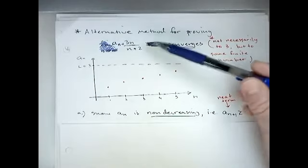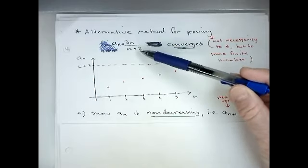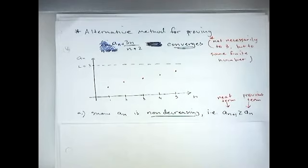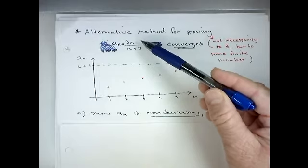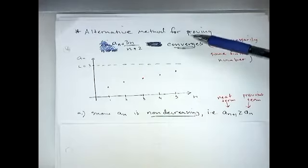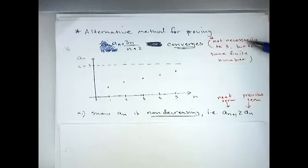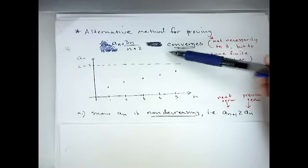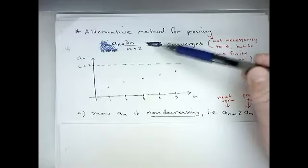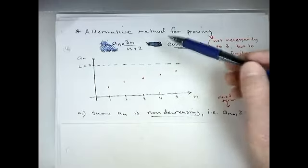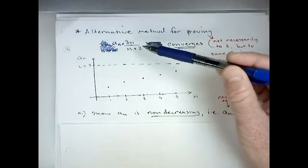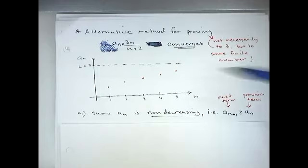In the last video we talked about the sequence a_n = 3n/(n+2) and showed using the precise definition of a limit that it converged to 3. In this video I'm going to show another way to show that this sequence converges — not necessarily to 3, just that it converges. It's not quite as precise as the last method, but it is a logical and easy-to-follow technique if all you're interested in is whether the sequence converges.